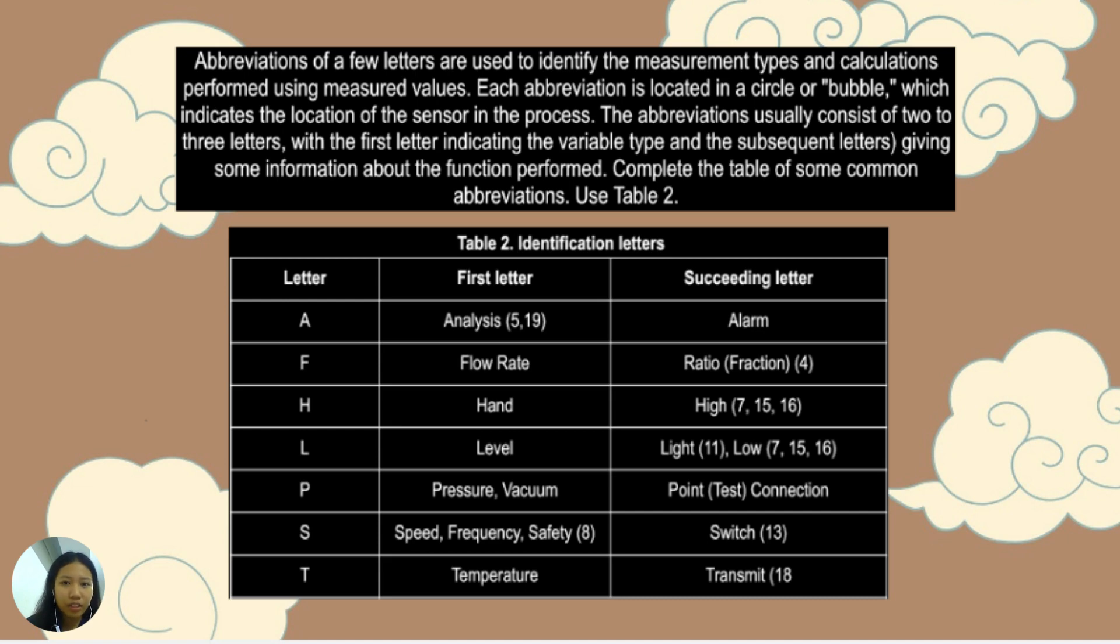For the second topic of the activity, which is the identification letters. Abbreviation of a few letters are used to identify the measurement types and calculations performed using measured values. Each abbreviation is located in a circle or bubble, which indicates the location of the sensor in the process. The abbreviations usually consist of two to three letters with the first letter indicating the variable type and the subsequent letters giving some information about the function performed.